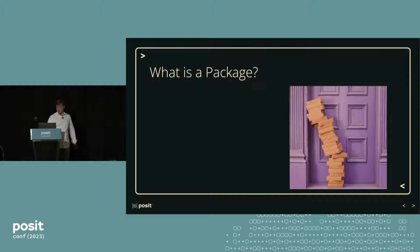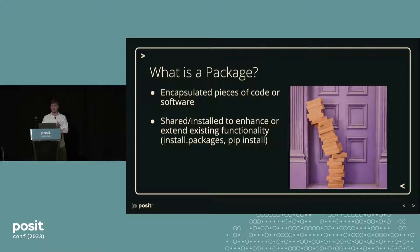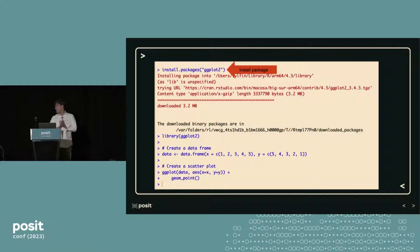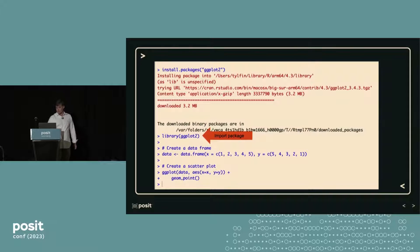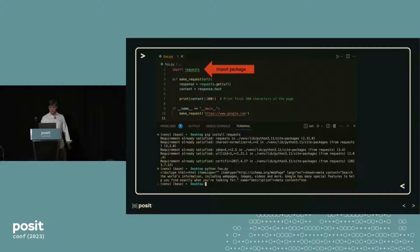So what is a package? The way I define a package is it's an encapsulated piece of code or software, shared or installed to enhance or extend existing functionality. In R, you use install.packages. In Python, you might use pip install, conda, or pipenv — you have a lot more options. Some examples: we use ggplot2 to create graphs and plots, and requests to make HTTP requests. We install a package using install.packages, use a library command in R to import a package, and then use that package in our code — in this case, creating a scatterplot. Same thing in Python: install a package at the command line using pip, import that package, and then use it in our code.